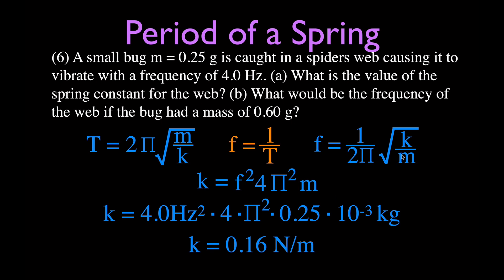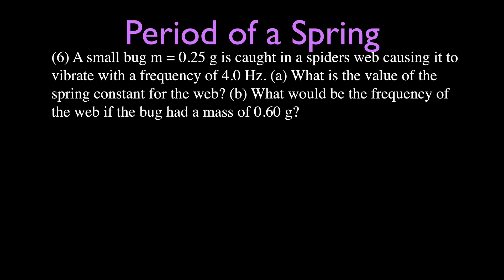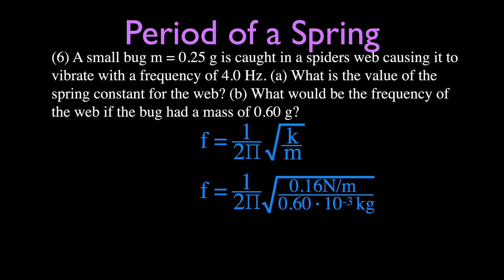Now using the frequency equation with the same k of 0.16 newtons per meter and the new mass of 0.6 grams (converted to 0.6 × 10⁻³ kilograms), we find the new frequency is 2.6 hertz. Increasing the mass decreases the frequency, as expected from the inverse relationship between mass and frequency in simple harmonic motion.